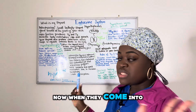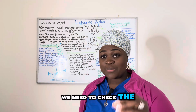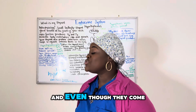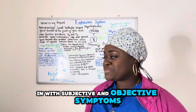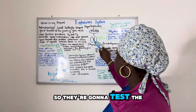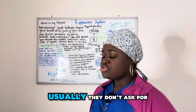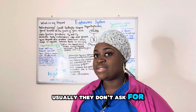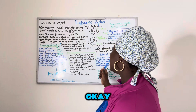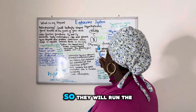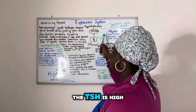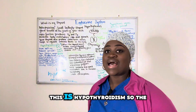When the patient comes into the hospital, in order to diagnose, we need to run blood tests — we can't diagnose with our eyes alone. Even with subjective symptoms, we still run bloodwork. They will test the levels of T4 and T3. When the blood test shows T4 is low, T3 is low, and TSH is high, then we know this is hypothyroidism.